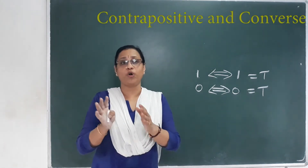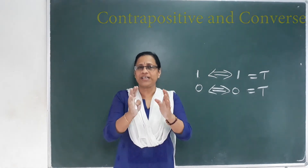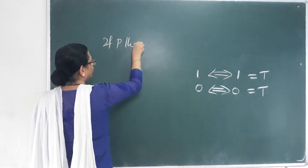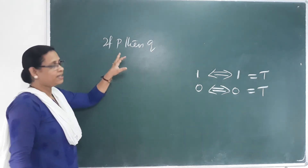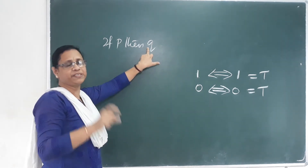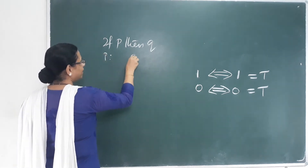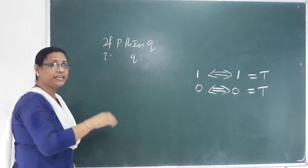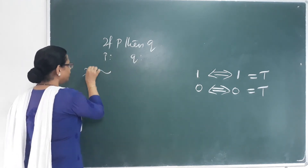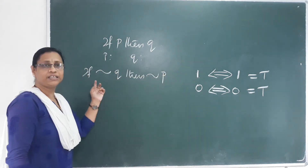Next point is Contra-positive and Converse. What do we call Contra-positive and Converse? If we have a simple sentence P and a simple sentence Q, there are two sentences for negation. If negation Q, then negation P — we call this Contra-positive.